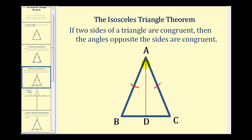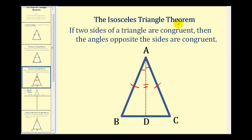If AD is an angle bisector, we know that angle BAD would be congruent to angle CAD. And the two small triangles would share side AD, and AD is congruent to itself. So by Side-Angle-Side, we can prove these two triangles are congruent, and therefore angle B would be congruent to angle C, proving the isosceles triangle theorem. So let's go ahead and set up the proof now.